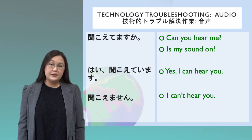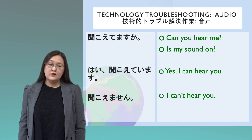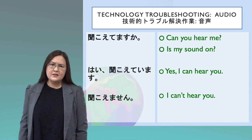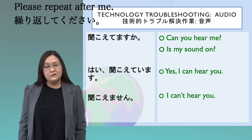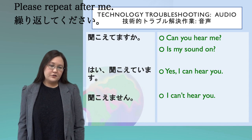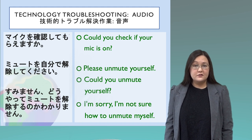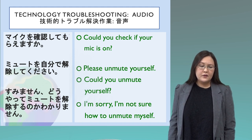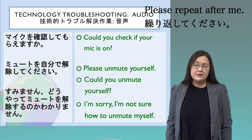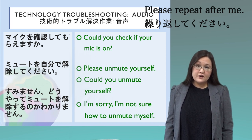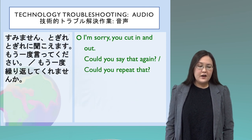Phrases for troubleshooting audio issues: 'Can you hear me?', 'Is my sound on?', 'Yes, I can hear you,' 'I can't hear you.' If the mic seems off: 'Could you check if your mic is on?', 'Please unmute yourself,' 'Could you unmute yourself?', 'I'm sorry, I'm not sure how to unmute myself.' If the connection is breaking up: 'I'm sorry, you cut in and out. Could you say that again?' or 'Could you repeat that?'